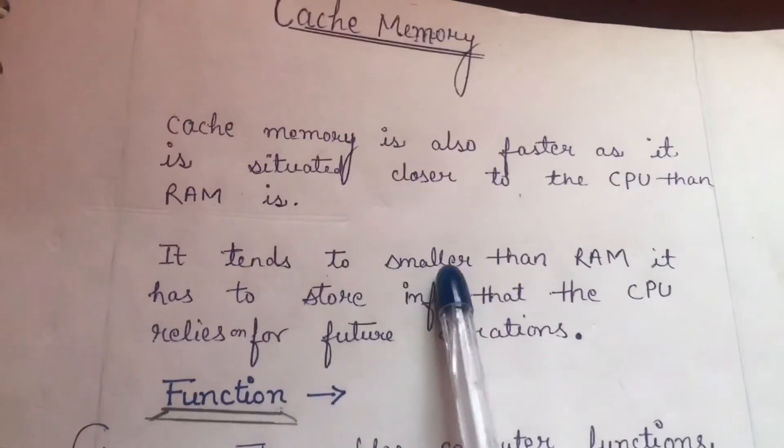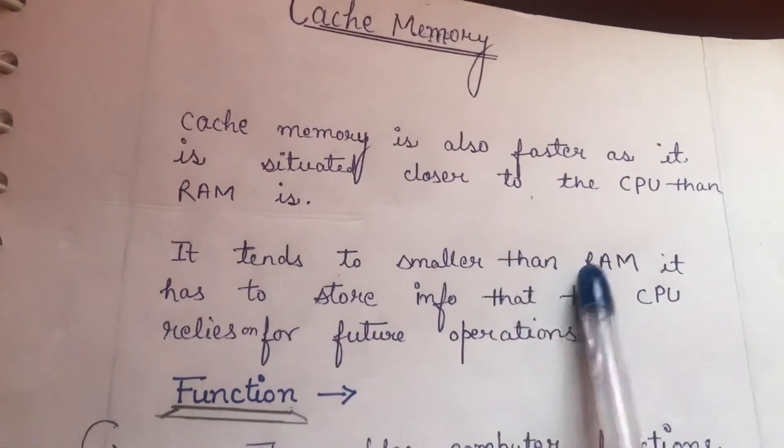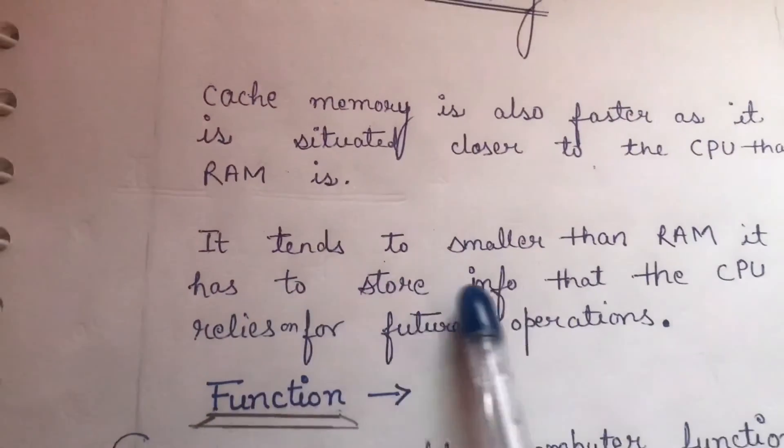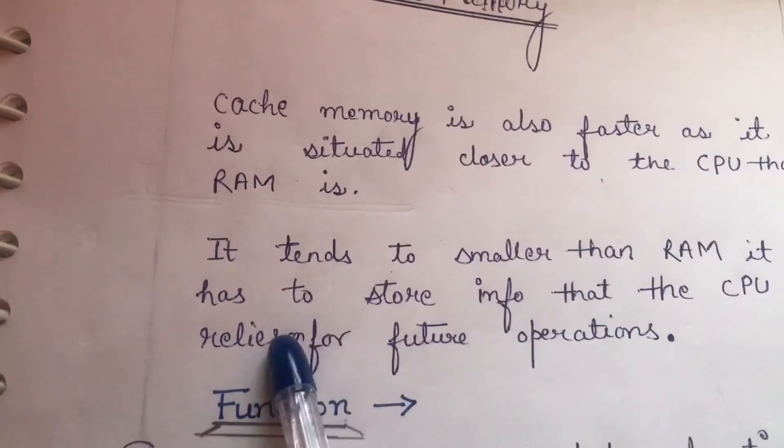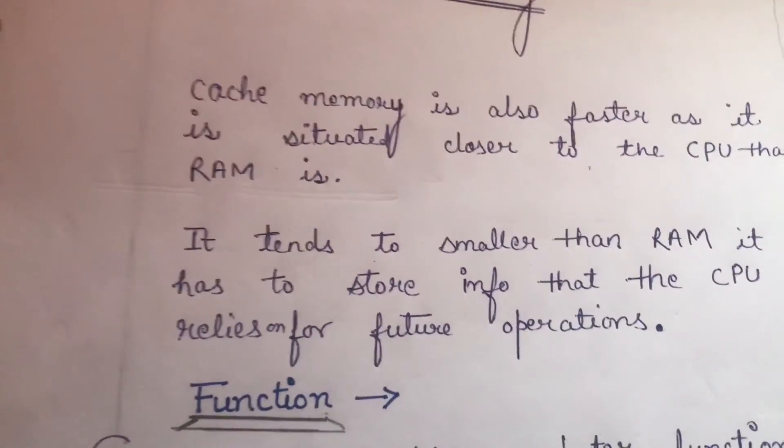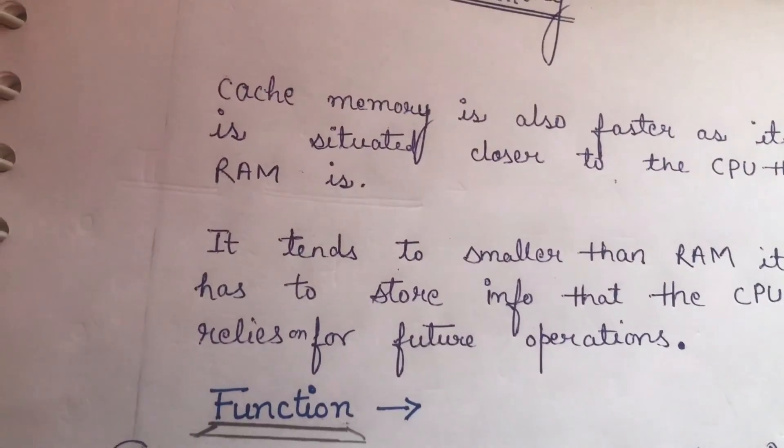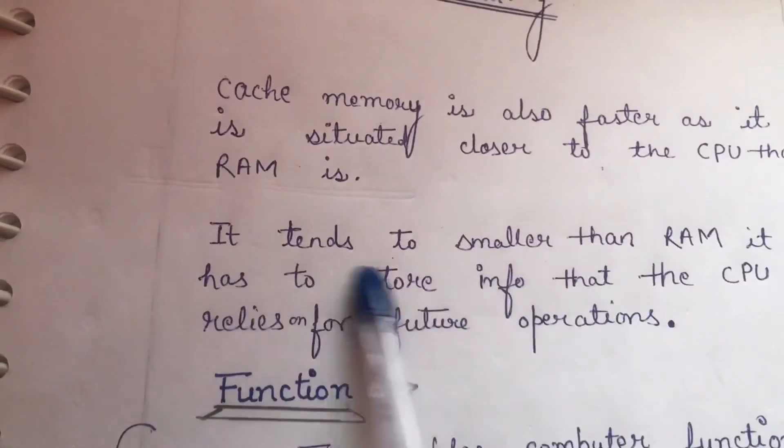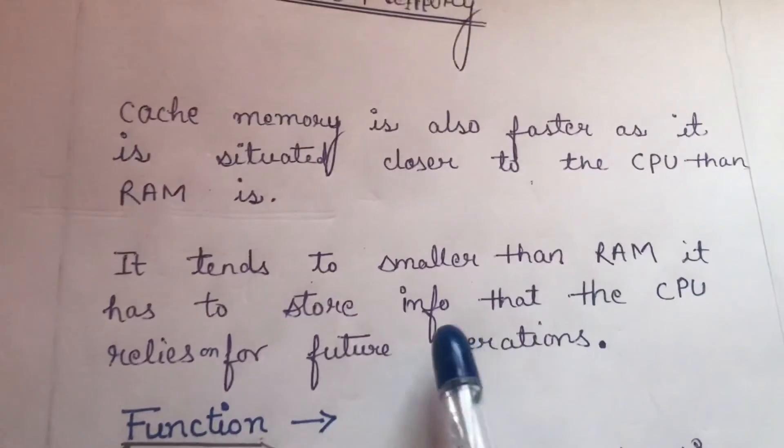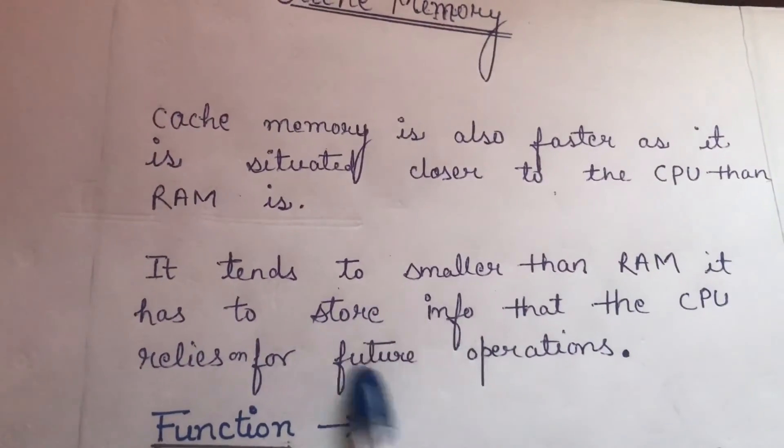It tends to be smaller than RAM. This RAM is quite small. It has to store info that the CPU relies on for future operations. In RAM, we keep the geometry box small, and the bag is big. I have given the example. This RAM is small, it is small for CPU for future operations. We keep it small.